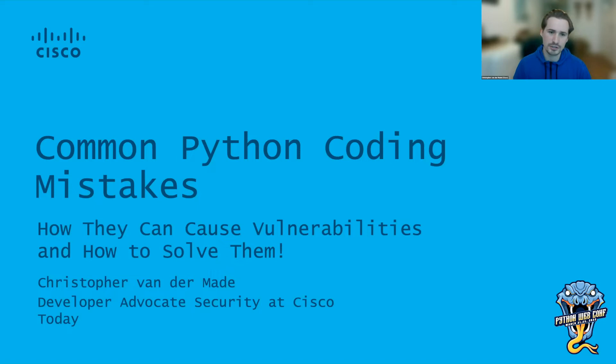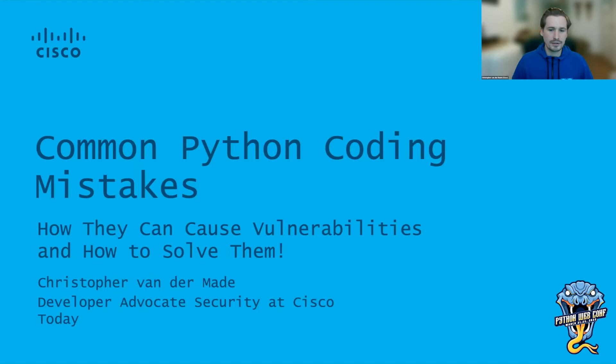People want to solve a certain problem using their piece of code. What I want to do today is go through a couple of common mistakes that you can make so that you are at least aware of them. I don't want everyone to start worrying — just know of them, and it will help you get better and better. My name is Christopher van der Maade, I'm based out of the Netherlands, and I work for Cisco as a developer advocate focusing on security.